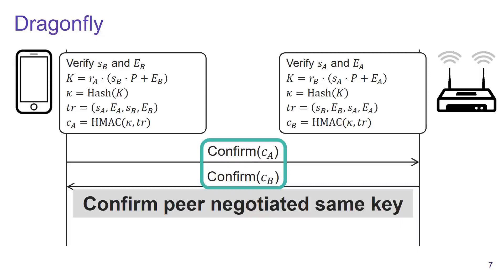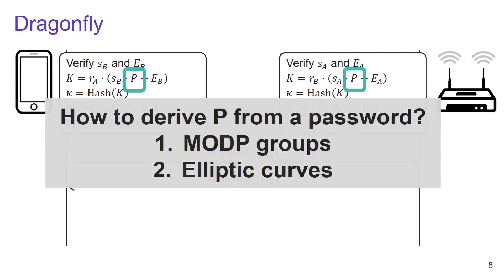The important question here is: how can we derive P from a password? How this is done depends on which specific cryptographic group is used in the Dragonfly handshake. In this presentation, we will focus on elliptic curves. So the question becomes: how can we convert the password into a point on the elliptic curve?